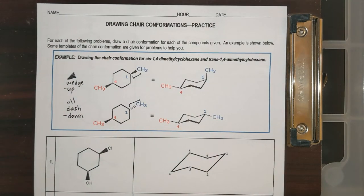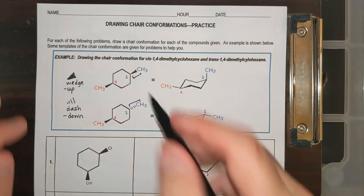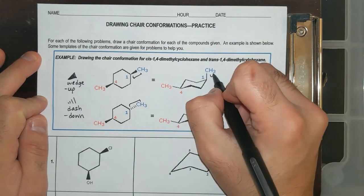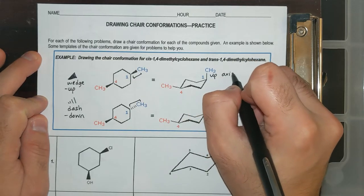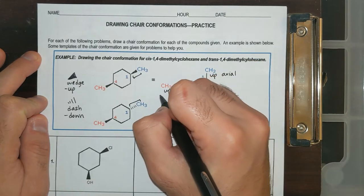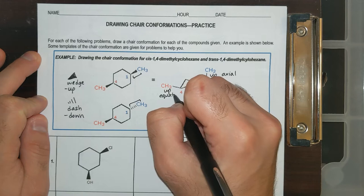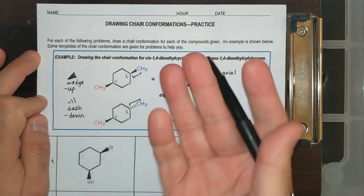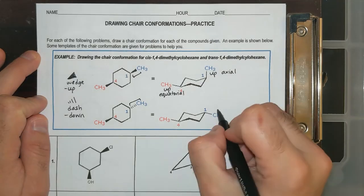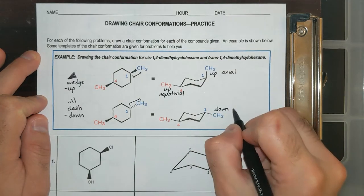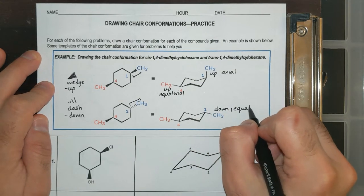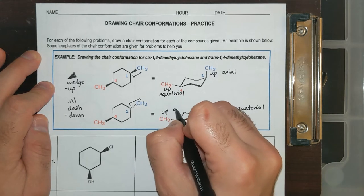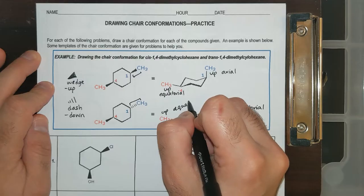That's all you need to know right now. For example, look here — I have both of these that are technically up. This one is up axial. This one is up equatorial. We learned these in our notes. They're both up. And this one is down equatorial, and this one is up equatorial also.